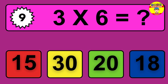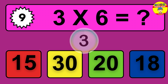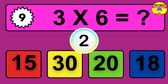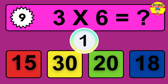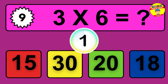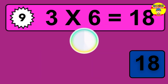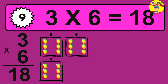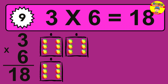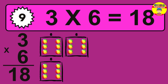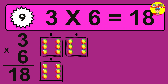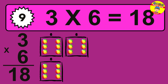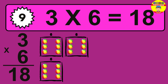Question 9. 3 times 6 equals what? The answer is 3 times 6 is 18. To calculate, we have 3 groups with 6 balls each one. So how many balls do we have? 18 balls.